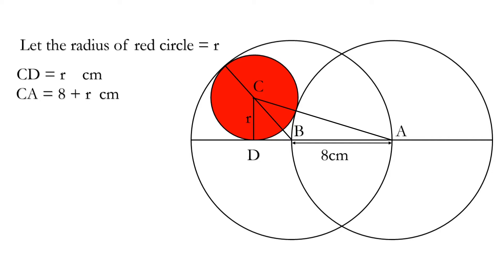So CA is equal to 8 plus R. Similarly CB is equal to 8 minus R and it is given that AB is equal to 8 cm.